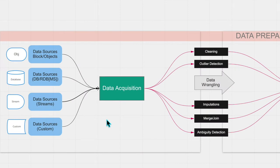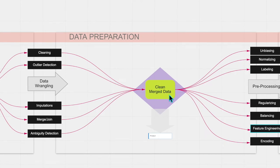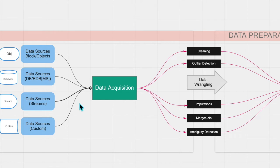At a high level, the data preparation stage looks like this. The output of this stage is the clean and merged data. For any organization there are several data sources — these could be blobs, objects, files, unstructured data, or relational database tables stored on a variety of database resources. Streams are another type of source data, and finally there are custom data sources, which could be any combination of all data types or organization-specific custom data types.